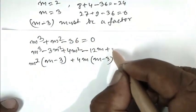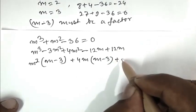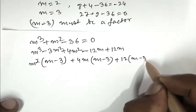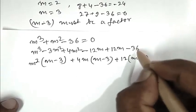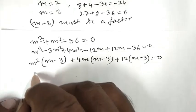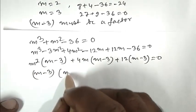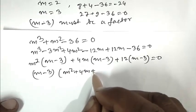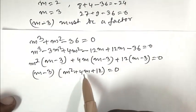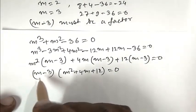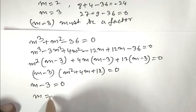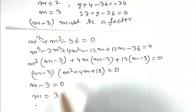Continuing the factorization, we get (m minus 3) times (m squared plus 4m plus 12) equals 0. So either m minus 3 equals 0, which gives m equals 3.